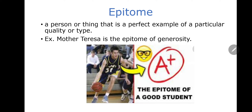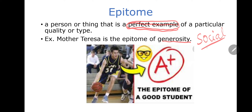Next noun is epitome. Epitome means a perfect example of something. For example, if you want to say generosity, Mother Teresa is the epitome of generosity. This student is the epitome of a good student. Anything that is a good representation of the entire group is called the epitome. Think of something that is an epitome of a particular group.